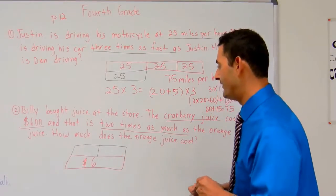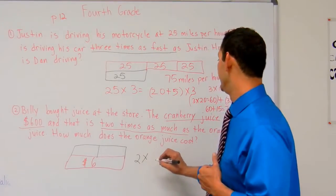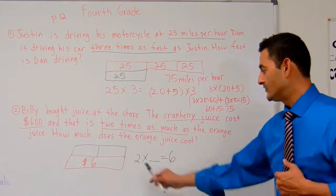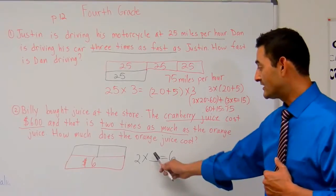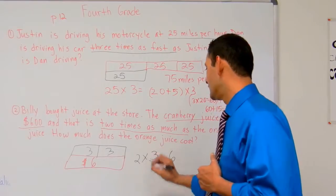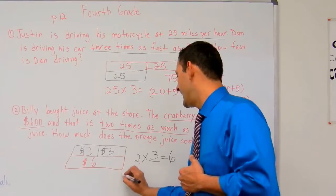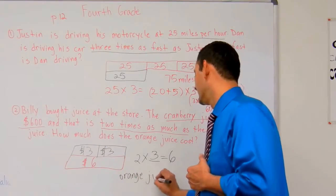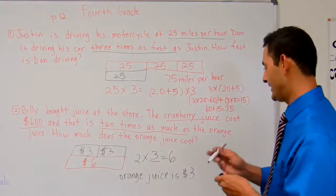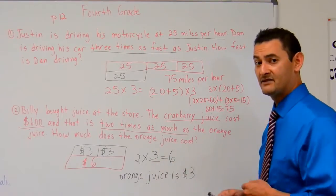So this is how I'm going to write the equation: 2 times something equals 6. So 2 times what equals 6? What's the unknown? That's going to be 3. So the orange juice is going to cost $3. Orange juice is $3. Let's check that — 2 times 3 equals 6, or 3 times 2 equals 6.